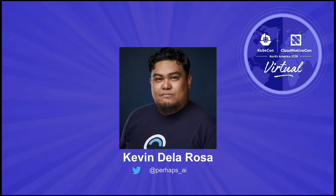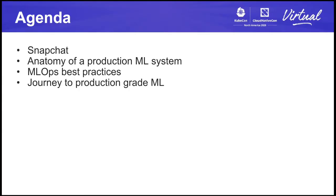A quick note on me. My name is Kevin De La Rosa, and I'm a machine learning engineer at Snapchat. I primarily focus on computer vision problems to support the scan feature in the Snapchat app. That's my Twitter handle — feel free to reach out to me there or on other channels like LinkedIn. Here's a quick overview of what we'll be covering: first, a brief introduction to what I work on at Snap and where machine learning fits in, then the key components of a production machine learning system, what MLOps is, and then the steps from experiment to continuous machine learning in production, closing out with an overview of what this looks like for my team.